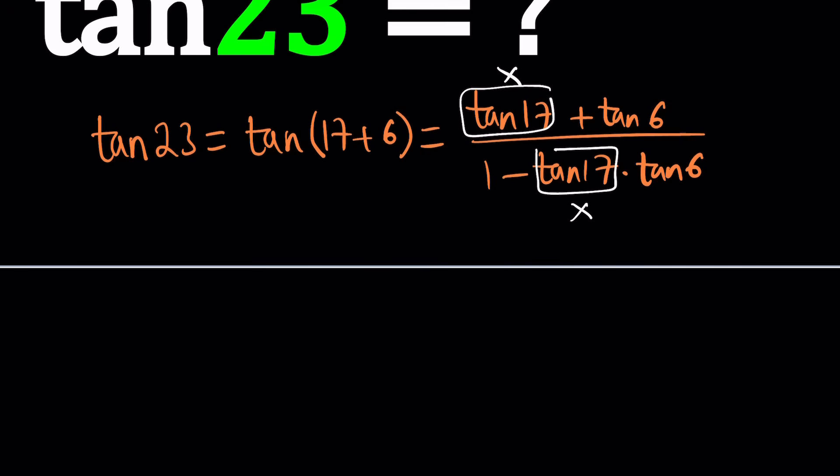Obviously, some of you are probably thinking, wait a minute, 23 is 6 more than 17. Isn't it? That's true. So can we not write, and from now on I'm not going to write the degree symbol, but it's understood, hopefully. Can I not write 23 as 17 plus 6? And then just use the formula, which is tangent 17 plus tangent 6 divided by 1 minus tangent 17 multiplied by tangent 6.